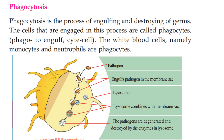What is phagocytosis? Phagocytosis is the process of engulfing and destroying germs. The cells engaged in this process are called phagocytes — 'phago' means engulf and 'cyte' means cell. The white blood cells, namely monocytes and neutrophils, are phagocytes.